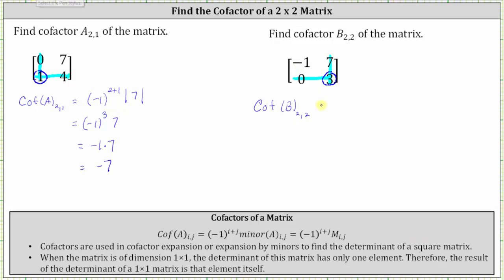So the cofactor of b sub two comma two is equal to negative one raised to the power of two plus two, times the minor of b sub two comma two, which is equal to the determinant of the one by one matrix with an element of negative one. Simplifying, we have negative one to the fourth, which is positive one, times the determinant of the one by one matrix where the element is negative one, which is the element itself. And one times negative one is negative one.